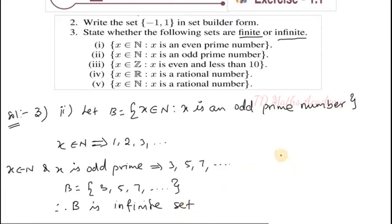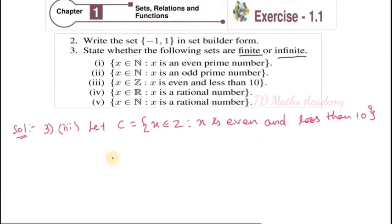That is all. Now, solution of third Roman numeral. Let C equal to the given set: x element of Z — first condition; x is even — second condition; and x less than 10 — third condition. You have to follow these three conditions and find that set.